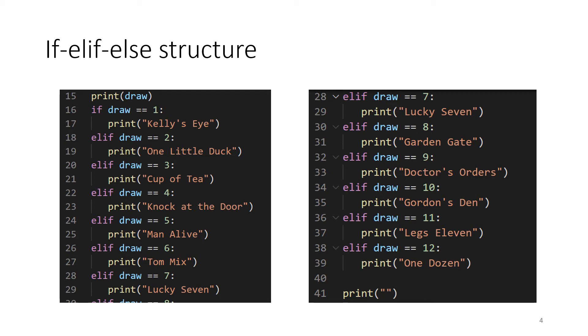If the number drawn is a 1, then we're going to print the phrase 'Kelly's Eye'. Otherwise, we're going to ask a subsequent question. If the draw is equal to number 2, then we're going to print 'One Little Duck'. If that is false, then we're going to ask another question. If the draw is equal to 3, then we're going to print 'Cup of Tea', and so on. So we go through all of the possibilities.